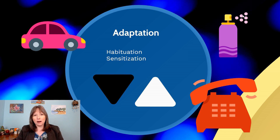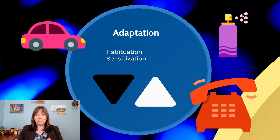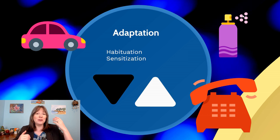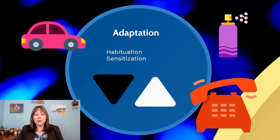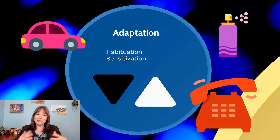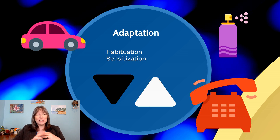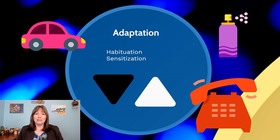Consider someone driving a car: as they get more experienced, they pay less attention to where their foot is on the pedals — it becomes more automatic, no longer taking up spotlight in their brain. Instead they may spend more time focusing on defensive driving and what other motorists or pedestrians are doing. We can imagine what would happen if you become more habituated to seeing pedestrians — when one does something spontaneous, you may be less prepared to react. This adaptation is a constant process, whether we're interacting with people or inanimate objects.